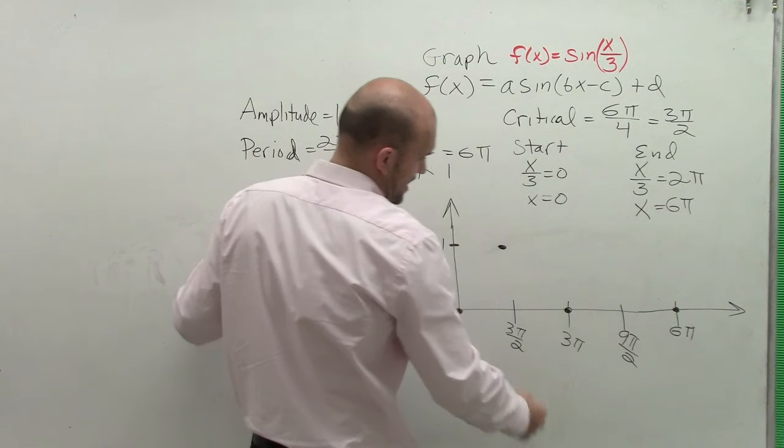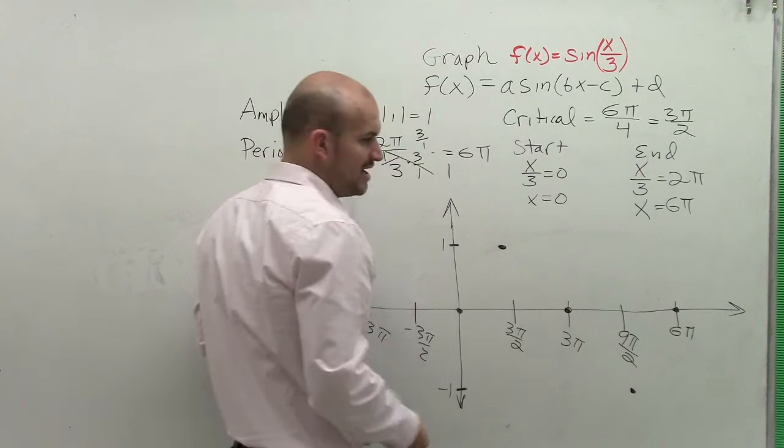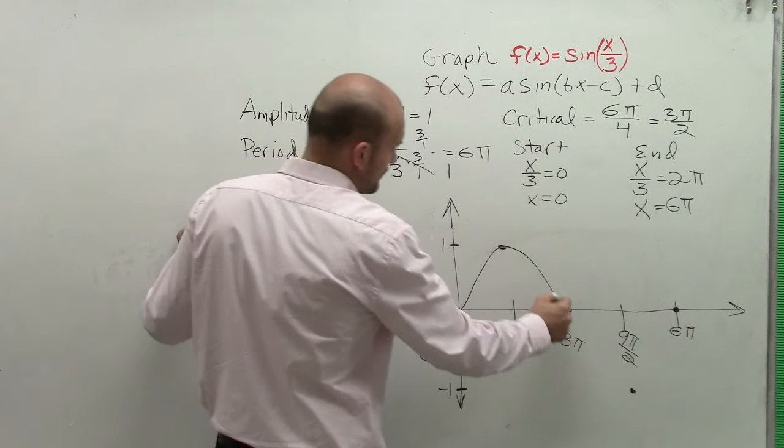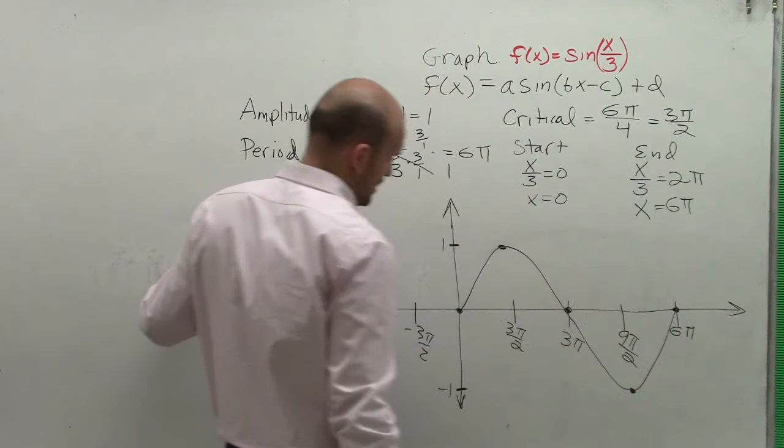Then we have an intercept, a minimum point, and then another intercept. So our graph is going to go up, go down, and then come back up.